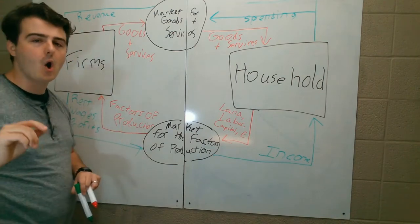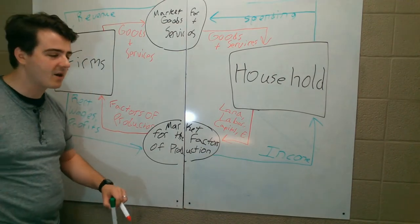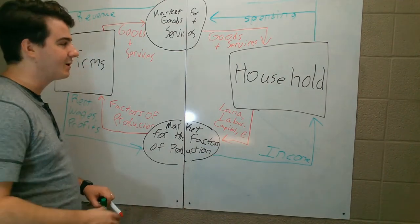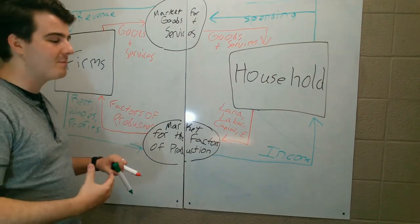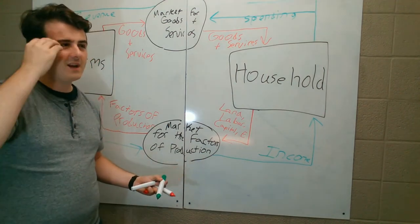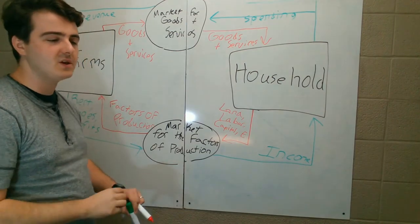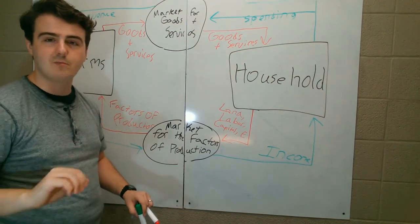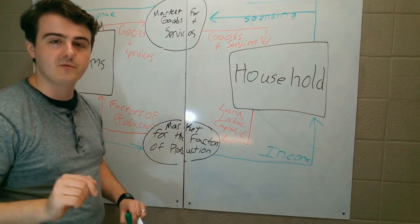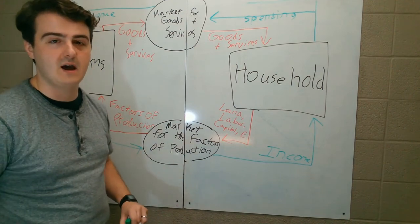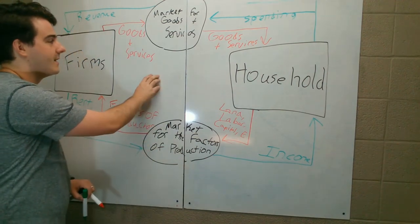We are going to make all kinds of models in economics — models that look like pictures, models that look like graphs, models that are conceptual in our heads, and models that are just lines and lines of math. Models are very important to economics, just like any science. And this is our first one right here.